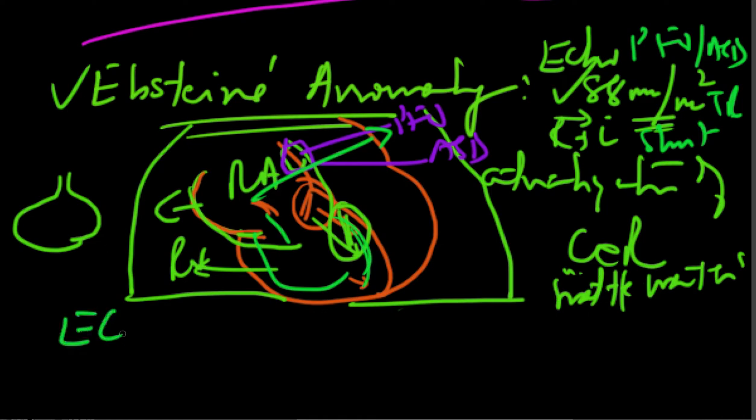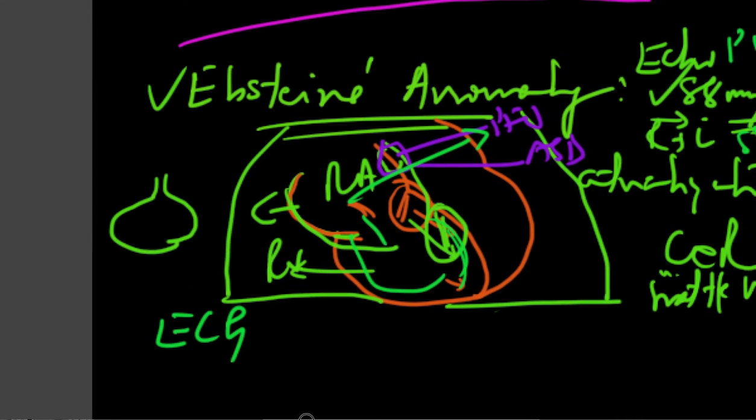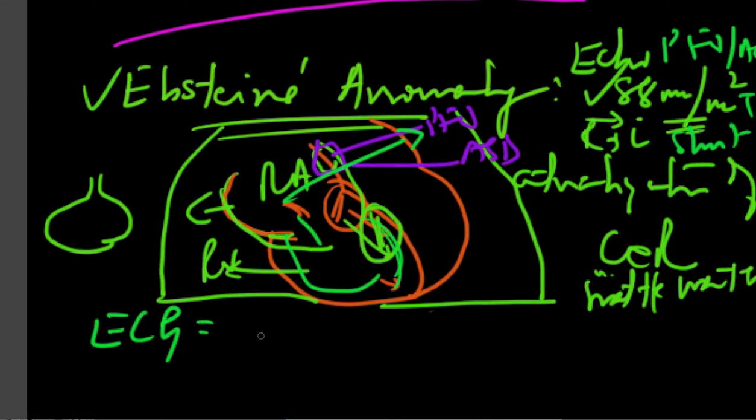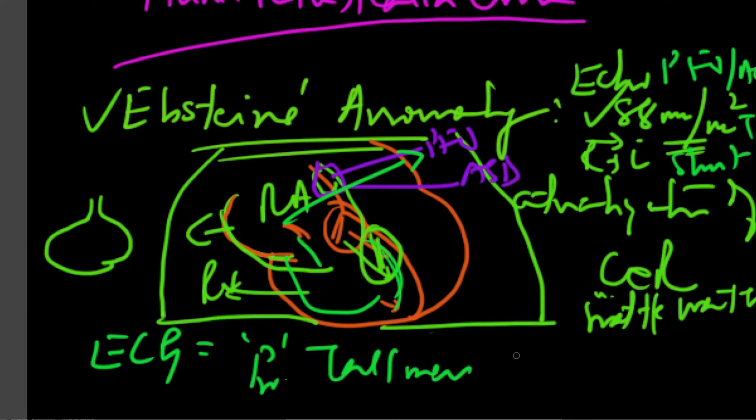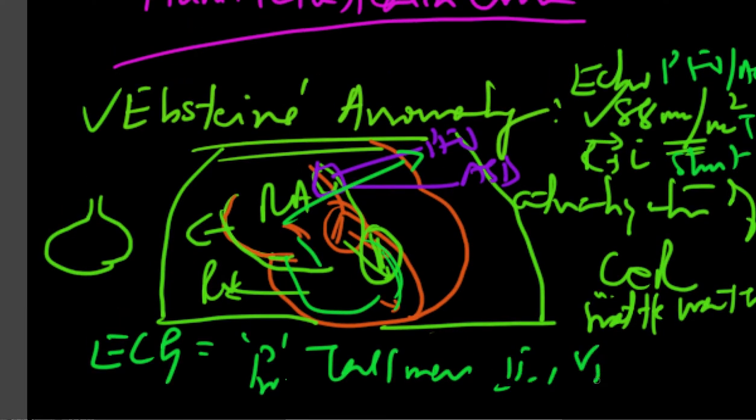ECG. It's very important to recognize the good old-fashioned test called ECG. You'll see tall P waves, very very tall and especially in lead 2 and V1. You'll have a PR prolongation which is the rule but normally if the PR is normal then obviously you start wondering whether there was an accessory pathway.